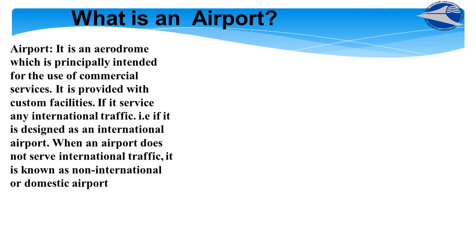Let's answer this question: What is an airport? An airport is an aerodrome which is principally intended for the use of commercial services. It is provided with customs facilities if it serves any international traffic, and is designated as an international airport. When an airport does not serve international traffic, it is known as a non-international or domestic airport.